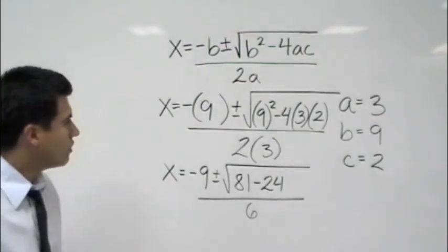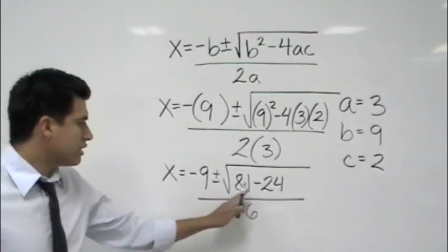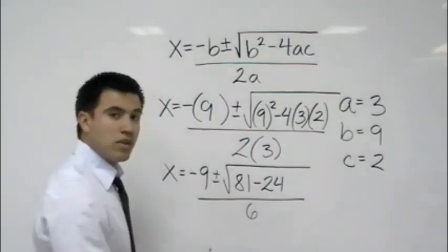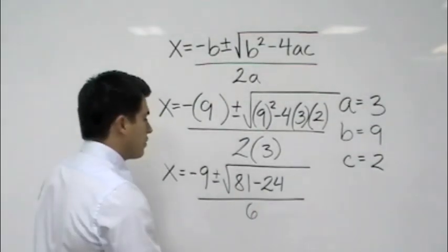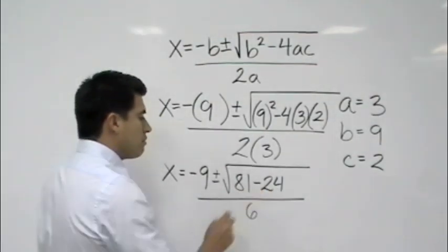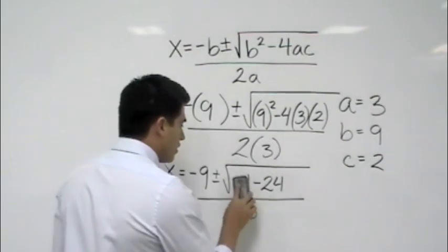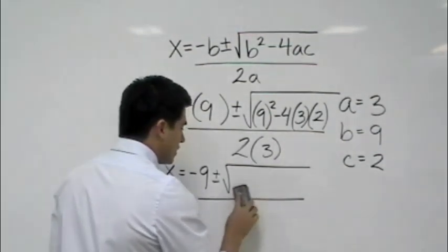Now, you want to go ahead and simplify everything. And you just work down. I know I'm erasing, but I want to make sure you guys see everything, but you should work down. Okay. 81 minus 24 will give you 57. Okay? A positive 57.